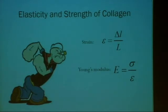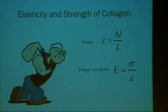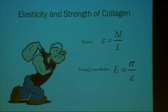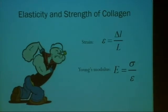The next term is strain, defined as the ratio between the displacement of a material — the elongation of it — over the original length. Meaning that if I have, say, 100% displacement, I'll have a rubber band twice as long as the original.